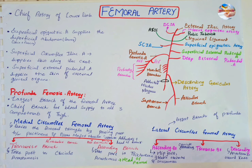The profunda femoris artery gives off the medial circumflex femoral and lateral circumflex femoral arteries, as well as various muscular branches and perforating branches, which are four in number and are numbered from above downwards.